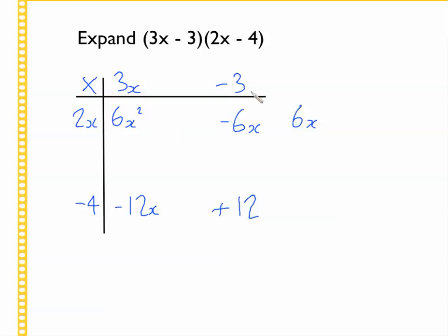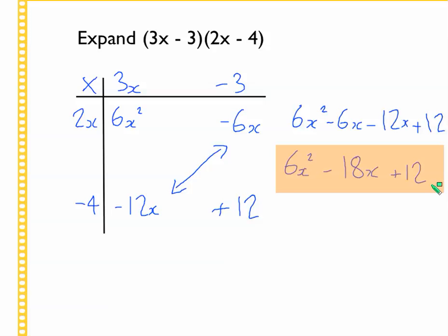Write everything out that we got as an answer in our multiplication grid. And then we look to combine the like terms. Like terms are always these diagonals on this grid. So 6x squared. We've got minus 6 and we take away 12 more. We're left with negative 18x. And plus 12. And that's your answer to that question.